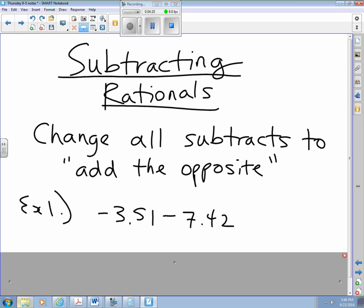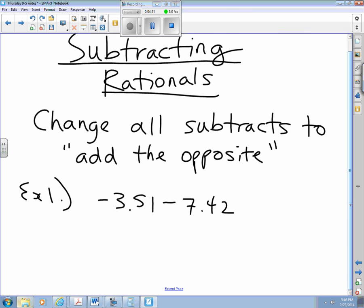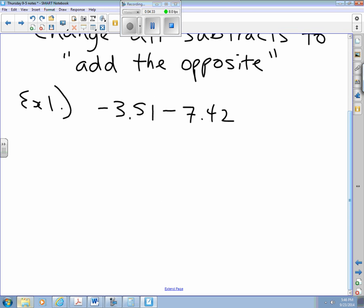For example, our first example will be to take negative 3.51 and subtract positive 7.42. Let me make myself a little room to work here. So again, my rule is add the opposite: negative 3.51 add the opposite, which is 7.42, but it's a negative.